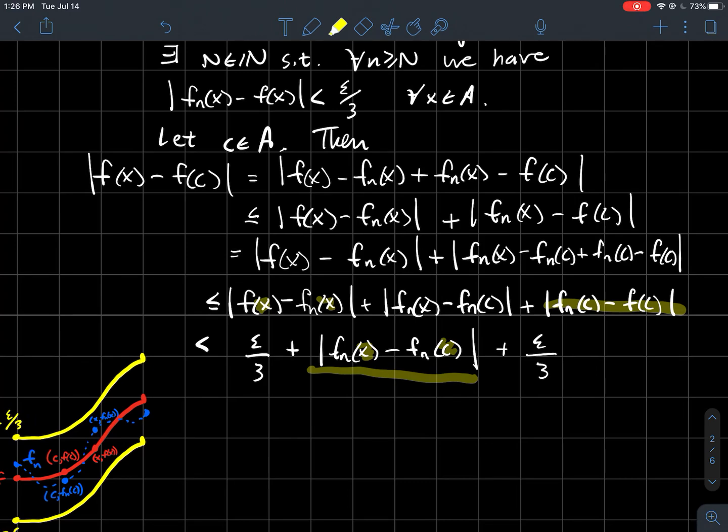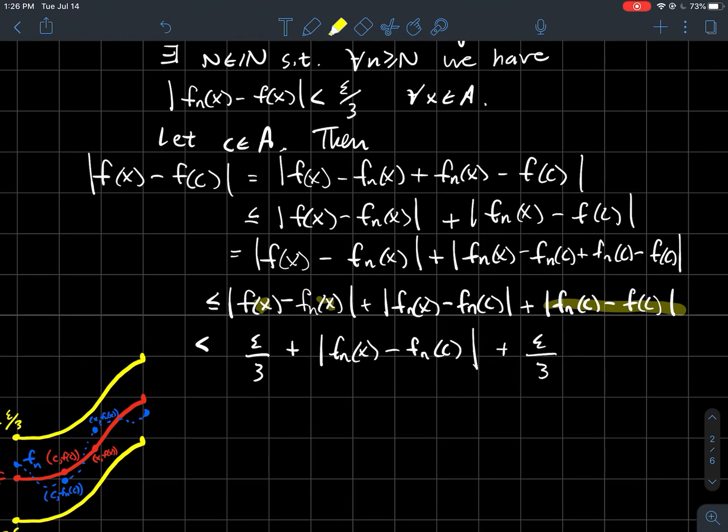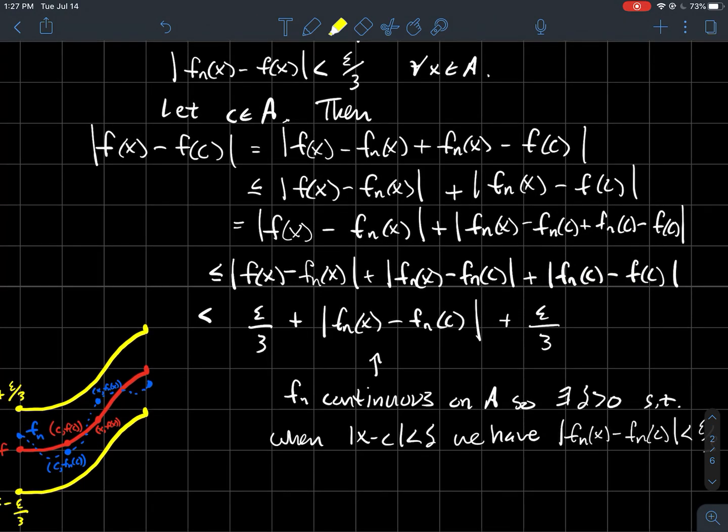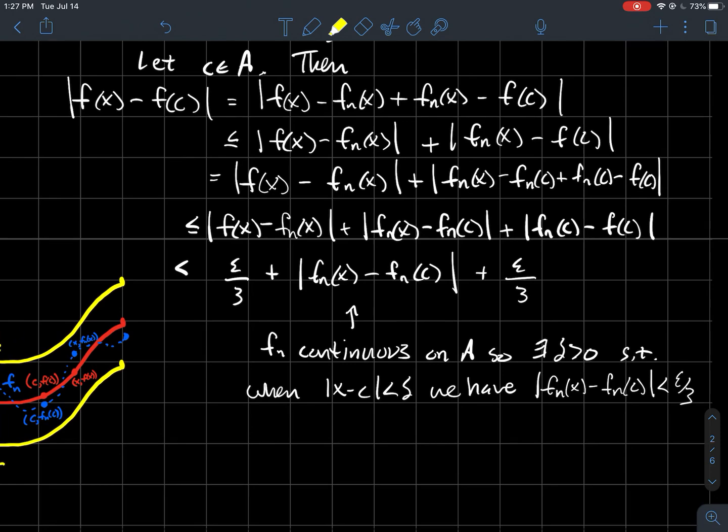That in a nutshell is the magic of what continuity means. That is the meaning of continuity, that's what I mean to say. So because fn is continuous on A, there exists some delta, so that as long as I pick x to be within delta of your point c, then I should be able to guarantee that the outputs should be within epsilon over three of each other. Therefore, this term is less than epsilon over three as well.